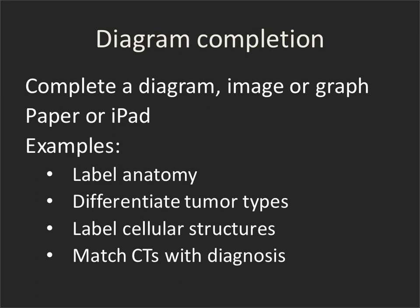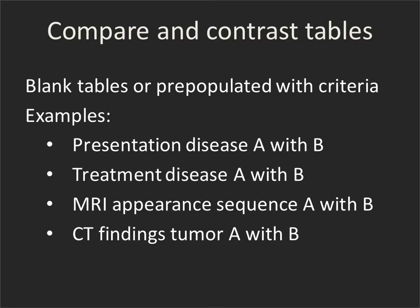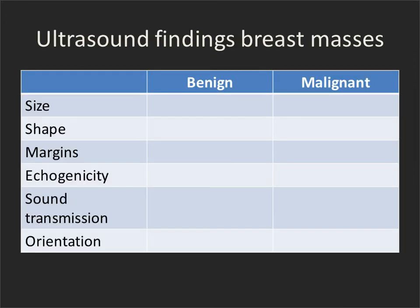I use compare and contrast tables a lot — compare and contrast is a very powerful learning tool. You can either give people blank tables or pre-populate them with the criteria they have to compare. Examples: the presentation or treatment of disease A with B, the MR appearance of something, the CT findings of tumor A versus tumor B. Here's one example I've used in ultrasound — comparing and contrasting the benign and malignant characteristics of breast masses. I've given them the criteria in the left-hand column, but you don't have to — you can give them a blank column and they have to come up with their own criteria.